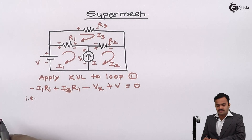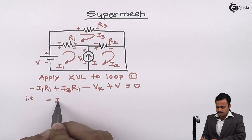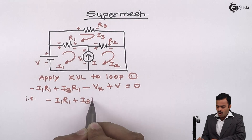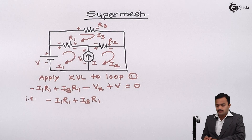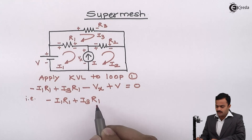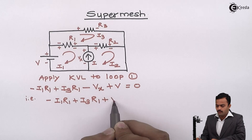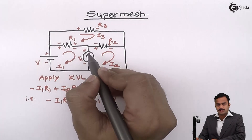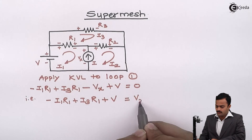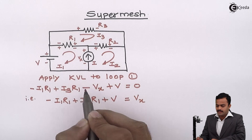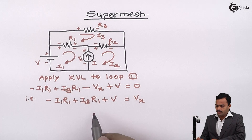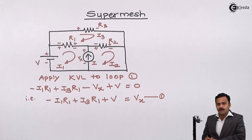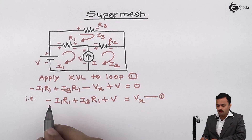I will rearrange this equation so that all terms in I1, I2, I3 are on one side and the voltage source along with the voltage across the current source are on the other side. Moving minus Vx to the other side gives plus Vx. This will be Equation 1. Now let's apply KVL to loop number two.